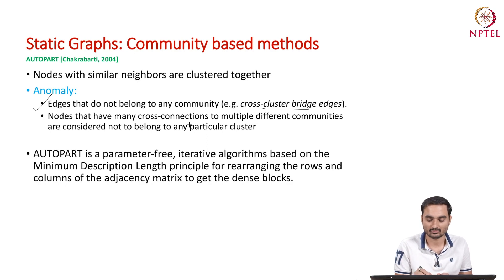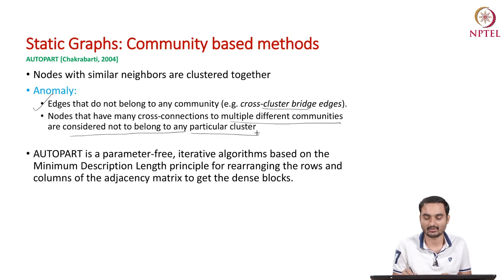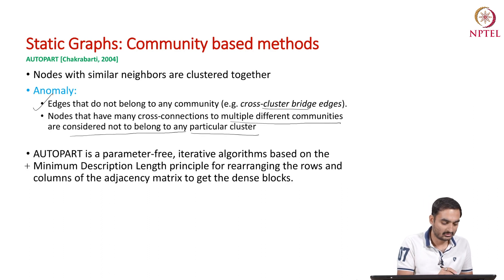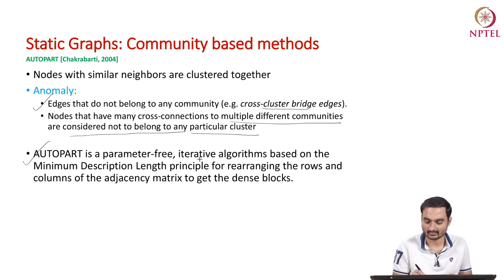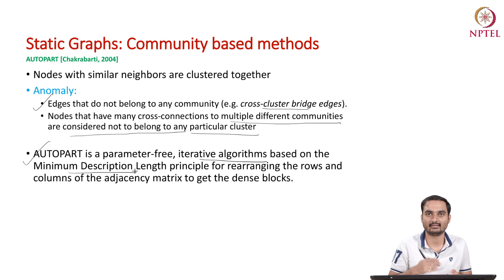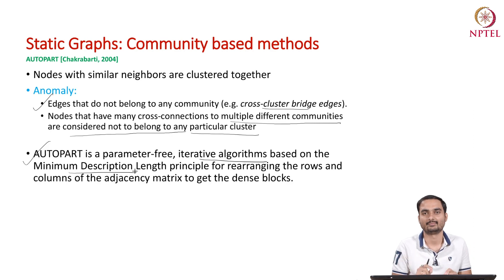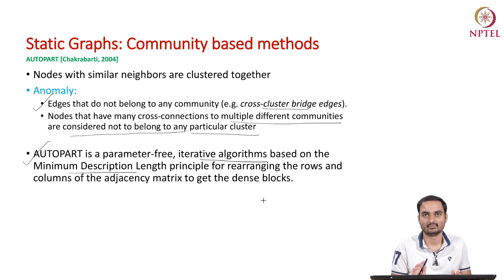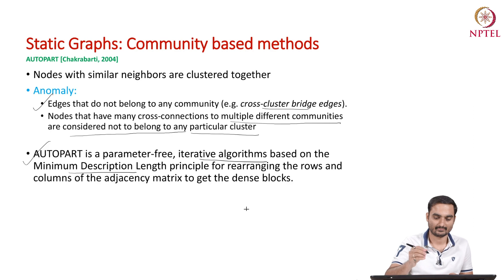Nodes that have many cross-connections to multiple different communities are considered not to belong to any particular cluster. The AutoPart algorithm, proposed long ago, is a non-parametric iterative algorithm which uses minimum description length. It uses bits to encode nodes, and the idea is that if a node is rare, it will be encoded with a lengthy set of bits. In this way, it identifies nodes which are rare — which are outlier or anomalous in nature.